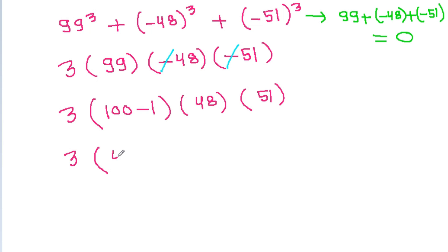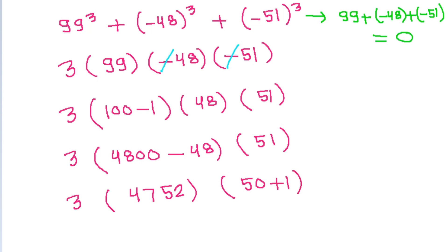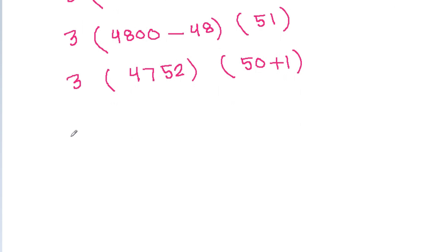It is 3 times 99 times minus 48 times minus 51. And 99 is equal to 100 minus 1, so 100 times 48 will be 4800, and minus 1 times 48 will be minus 48. So 99 times 48 gives us 4800 minus 48, which equals 4752, and we multiply that by 51.